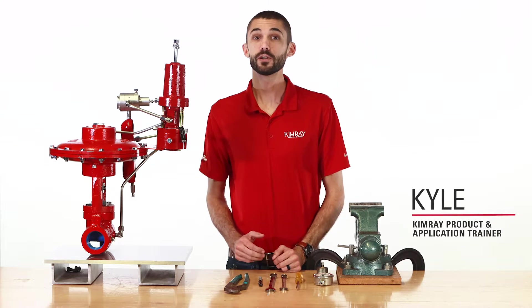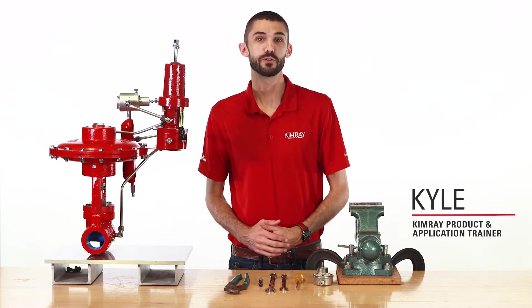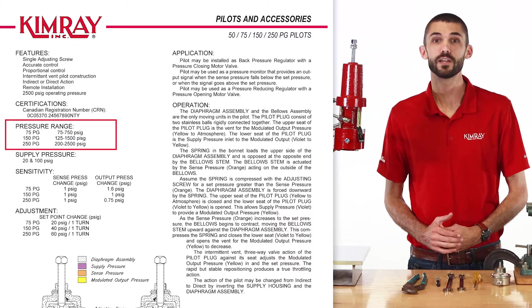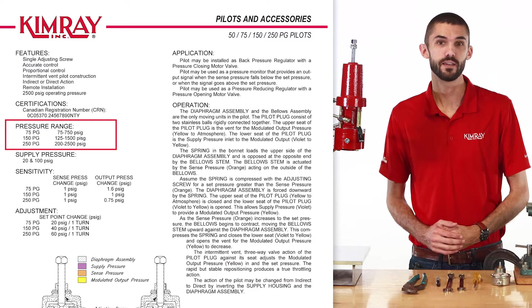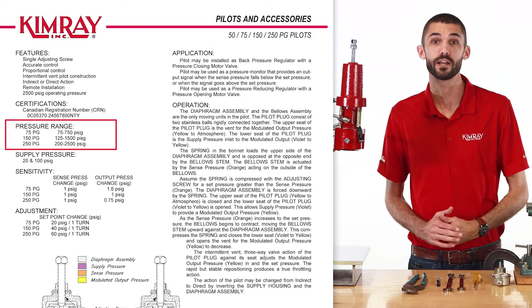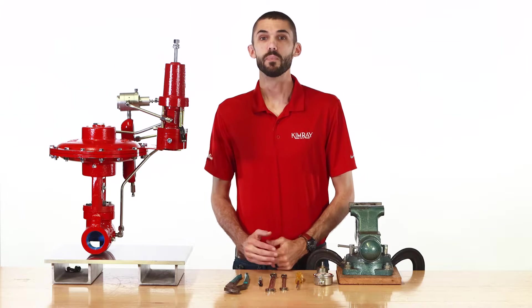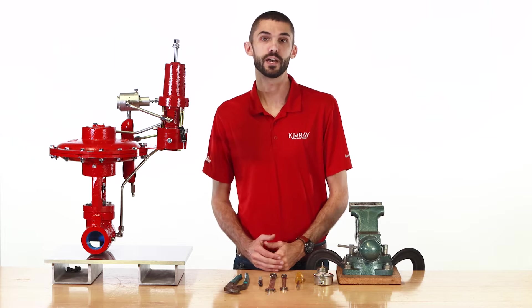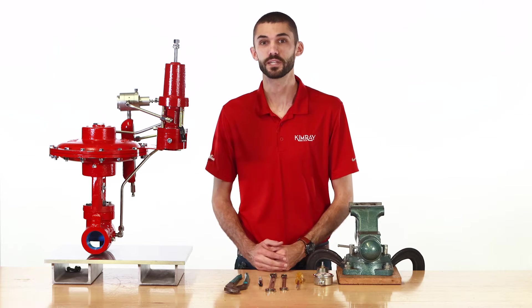A pressure pilot is used to monitor and control upstream or downstream pressure between 75 and 2500 psi. It does this by pneumatically positioning a control valve to achieve your desired setpoint. The Kimray Bellows Controlled Pressure Pilot is modular, versatile, and easy to use in several applications.